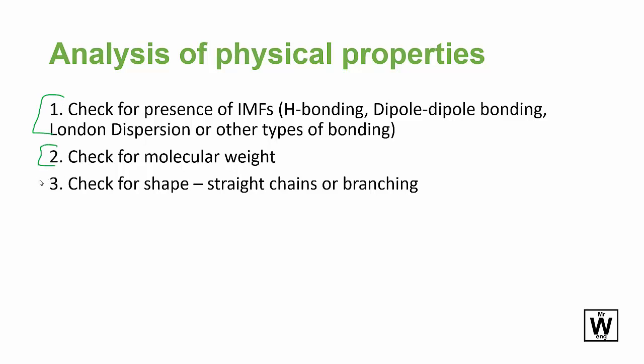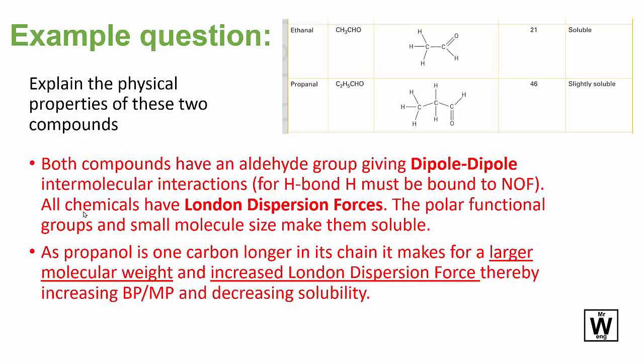So for physical properties, the general approach is: first, work out what type of intermolecular forces are present; second, look at the molecular weight; third, look at the shape. Don't forget all three of those things when analyzing which compound will have better solubility or a higher melting and boiling point.